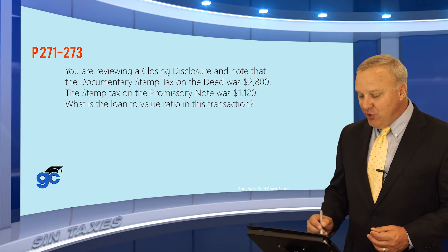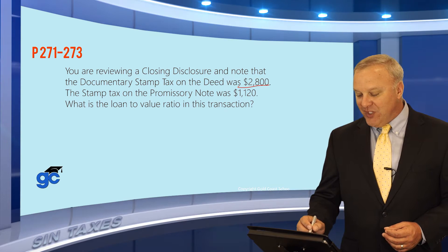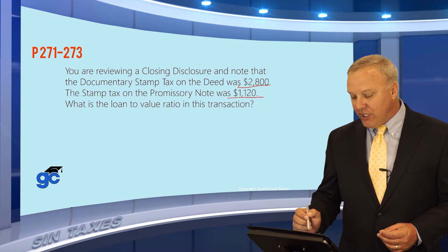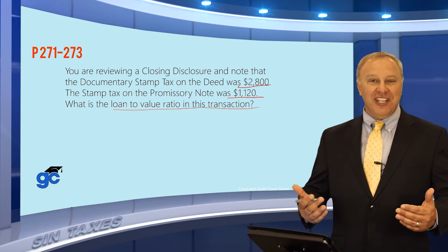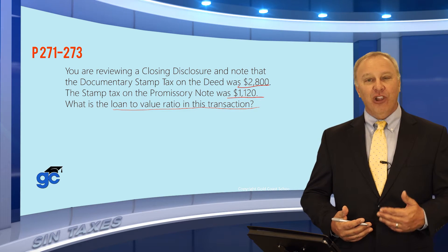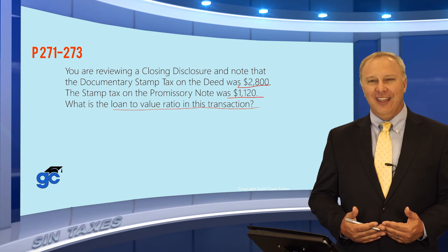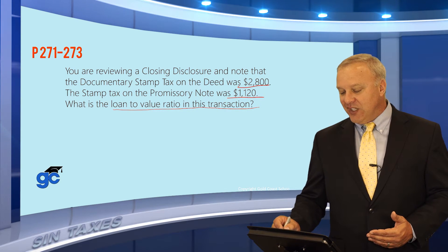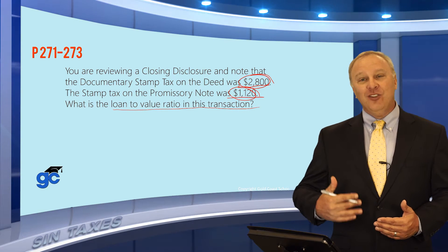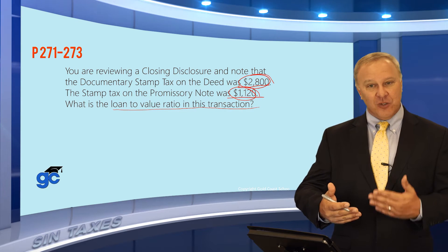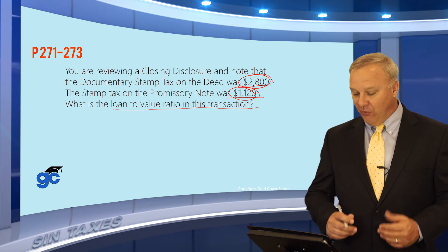Let's take a look at a question. You're reviewing a closing disclosure and the documentary stamp tax on the deed was $2,800. The stamp tax on the promissory note was $1,120. The question asks: what is the loan-to-value ratio? To calculate LTV you need the loan amount and the sales price — they didn't give you either directly, but they actually did by giving you the tax amounts. Once you work through the calculations backwards, you can find the sales price and the loan amount, then calculate the LTV.